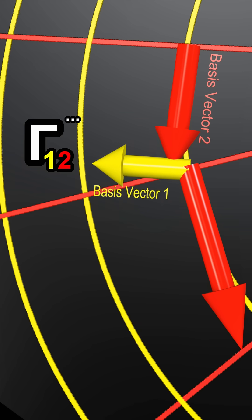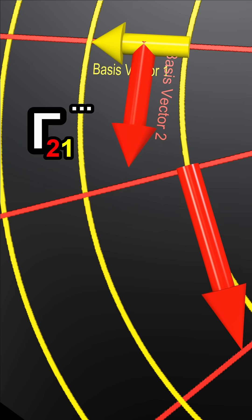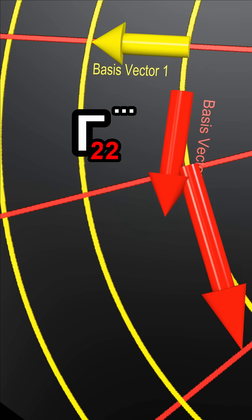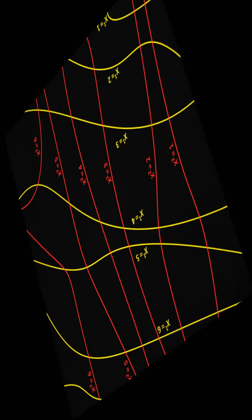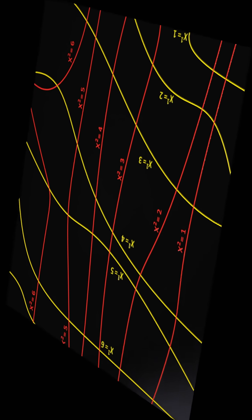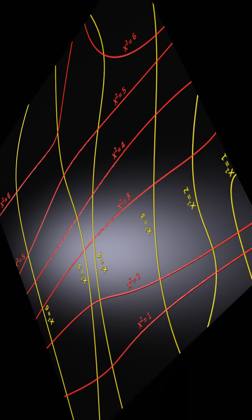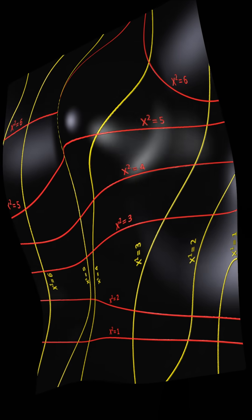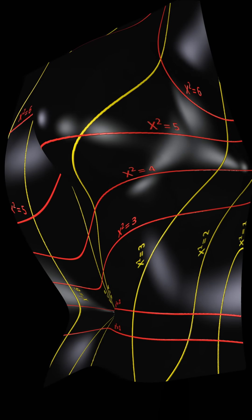These symbols indicate the rate at which the basis vectors are changing at each point in space. The basis vectors could be changing because we are using a curved coordinate system in a flat space-time, or the basis vectors could be changing because we have a curved space-time, even though we have coordinates as straight as possible.